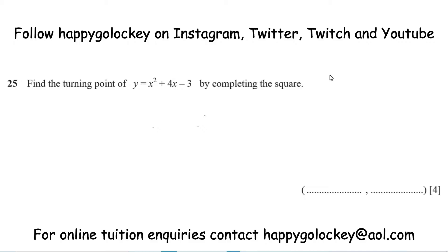Okay guys, back for the worked solutions. The first thing we need to do is be aware of how to complete the square. A turning point is when you've got a quadratic graph — a u-shaped or an n-shaped parabola — the turning point is this point here, as soon as it goes from the minimum and then rises back up again. That's what's called a turning point.